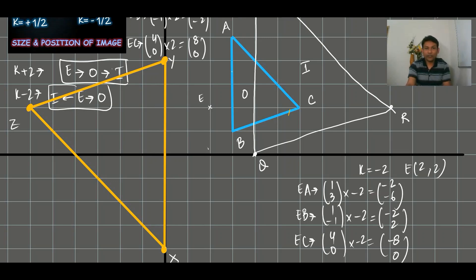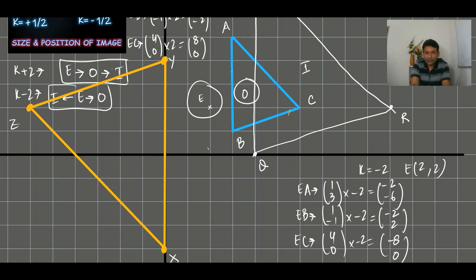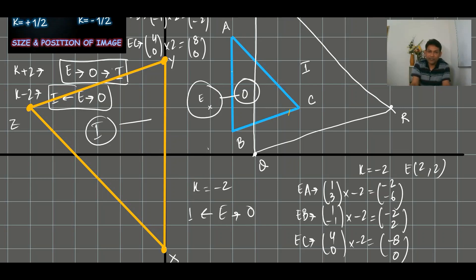In case one, when K is positive two, the image is on the same side as the object. But in this case with K minus two, you can see: center is here, object is on the right-hand side, but the image comes on the left-hand side — the opposite side. That is very important for K plus two and minus two.